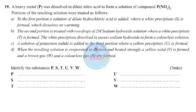Question eighteen: a heavy metal P was dissolved in dilute nitric acid to form a nitrate — P has a valency of two. To the first portion, dilute hydrochloric acid was added, forming a white precipitate S. All chlorides are soluble except silver and lead(II) chloride. The second portion was treated with two drops of 2 M sodium hydroxide, forming white precipitate T.